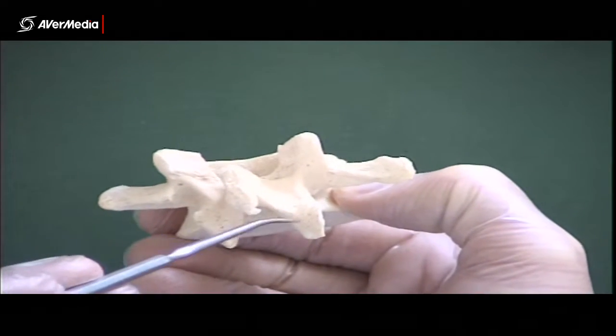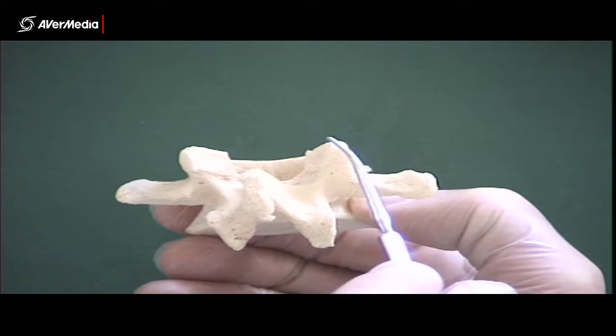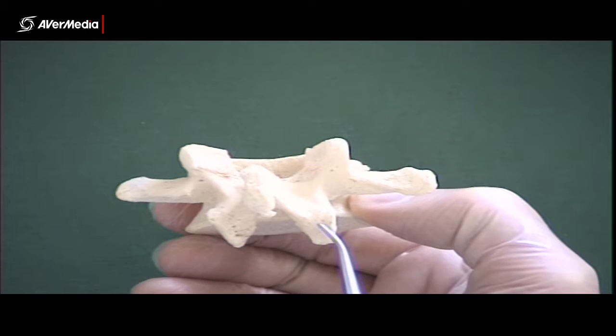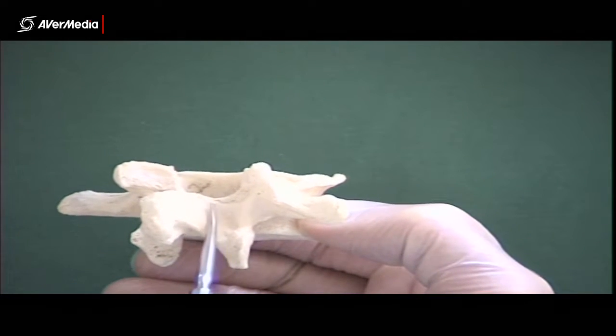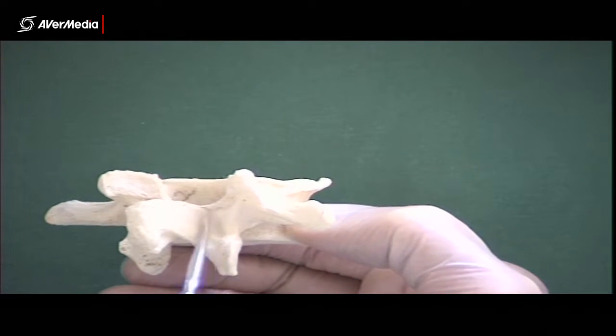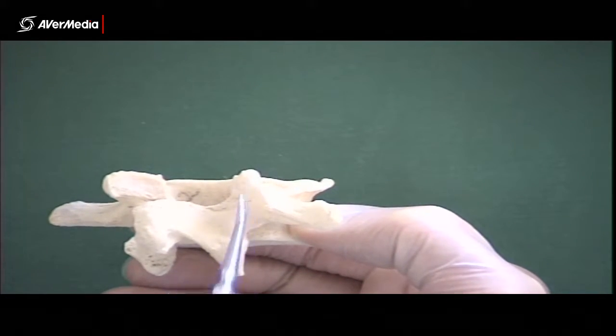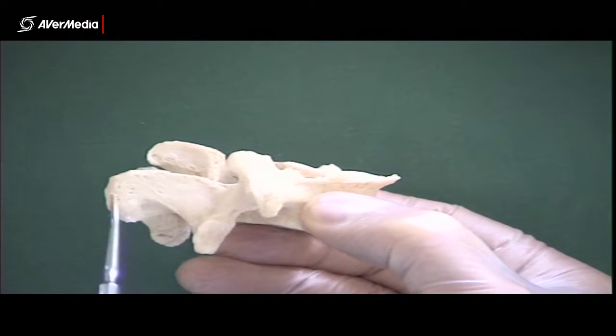And again, seen from a posterior point of view, you can see that quite clearly there. So transverse process, superior articular process, inferior articular process. Then this flattish region here is the lamina. So the lamina is kind of in between the articular processes, and then the last one we need to know, the spinous process.